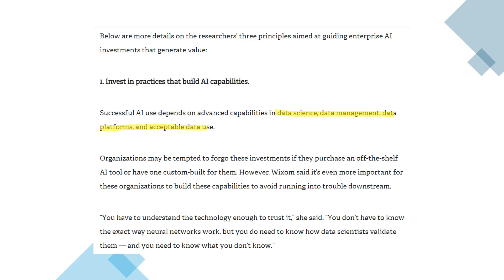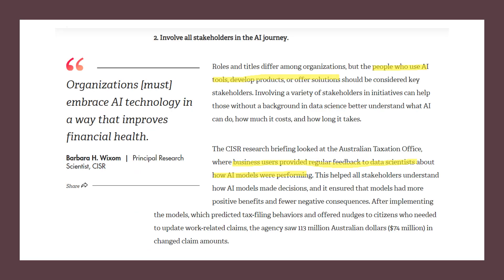The first principle is: invest in practices that build AI capabilities. Successful AI use depends on advanced capabilities in data science, data management, data platforms, and acceptable data use. Organizations may be tempted to skip these investments if they purchase an off-the-shelf AI tool, but it's even more important to build these capabilities to avoid trouble downstream. You need to understand the technology enough to test it — you don't need to know exactly how neural networks work, but you do need to know how data scientists validate them and what you don't know.